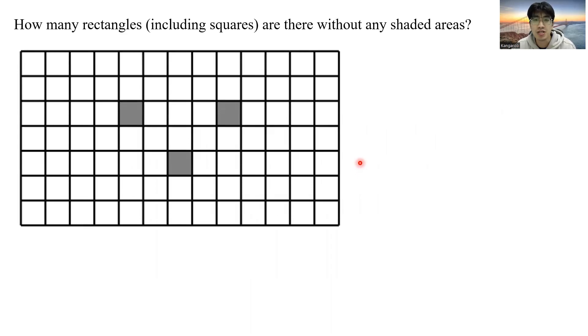How many rectangles, including squares, are there without any shaded areas in this shape? Our normal approach would be simply to count how many such rectangles exist, but the locations of these three shaded areas here causes you issue. So it turns out that this is not a very useful approach.